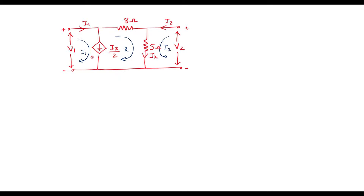There is a current source between two loops, so first let me analyze this current source. I can write Ix/2 is equal to I1 minus X. As I1 and Ix/2 are in the same direction, we take I1 first, and X is opposite, so it is I1 minus X. Let me call this equation 1.